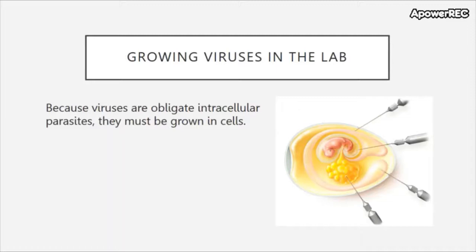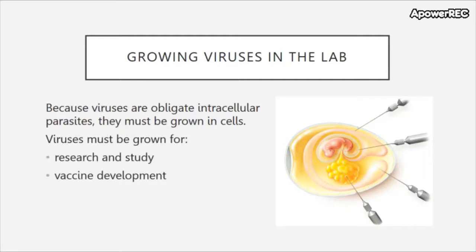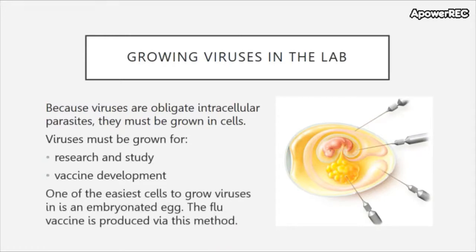How do scientists grow viruses in the lab? Viruses are obligate intracellular parasites — they must be grown in cells. Just as obligate anaerobes must grow in the absence of oxygen, viruses are required to grow inside cells, making them parasites. In order to culture them in a lab you need cells as a medium, which is critical for research, study, and vaccine development. One of the easiest cells to grow viruses in is an embryonated egg; the flu vaccine is usually produced via this method.